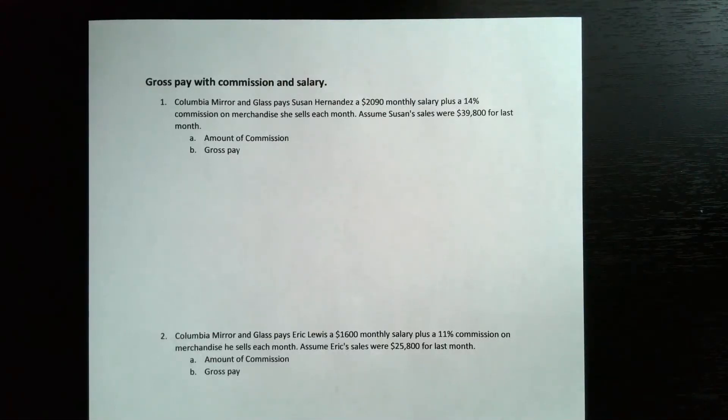In this problem, we're going to talk about gross pay with commission and salary. First problem: Columbia Mirror and Glass pays Susan Hernandez $2,090 monthly salary plus a 14% commission on merchandise she sells each month. Assume Susan's sales were $39,800 for last month.